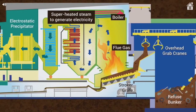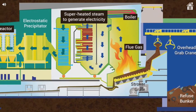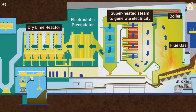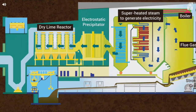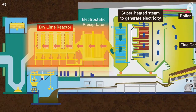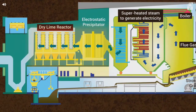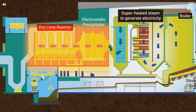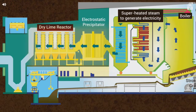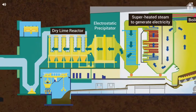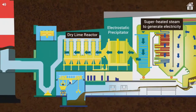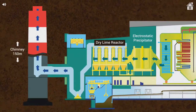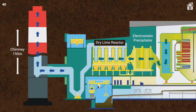The flue gas is cooled and then passes through a dry lime reactor and an electrostatic precipitator which will remove up to 85% HCl and 99.5% of the dust content in the flue gas. The flue gas is finally discharged to the atmosphere via chimneys that are 150 meters tall.